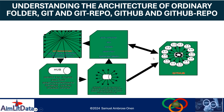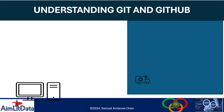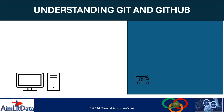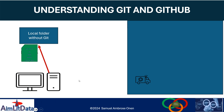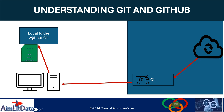We have decided to break this architecture down to understand each component one by one. This is our local machine here, and that side there symbolizes the internet — outside our house. That small lorry is used to mimic the idea that the Git program is like the driver of everything we need to control our versions. From our local machine, you can go to the internet and download the Git program. The local machine initially exists without Git, but after downloading Git, we will have it running.